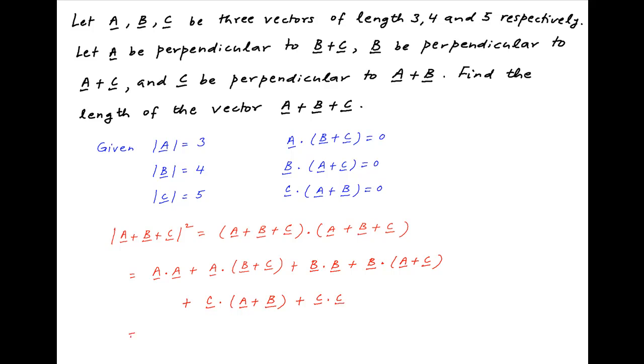This can be rearranged as the square of absolute value of vector a plus the square of absolute value of vector b plus the square of absolute value of vector c plus a dot b plus c plus b dot a plus c plus c dot a plus b.